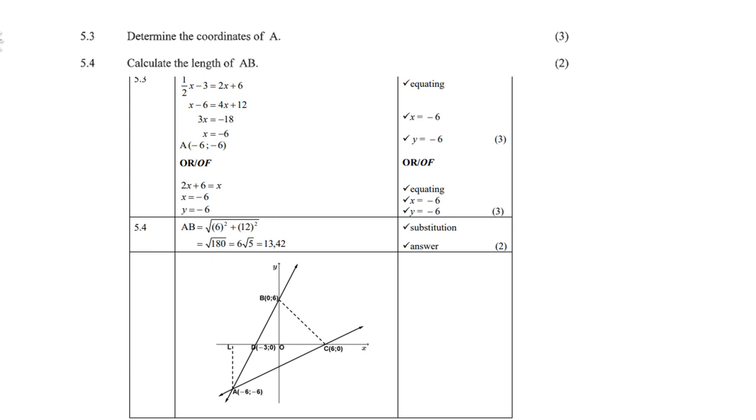5.4, how long is AB? So we're going to use the distance formula we've learned in analytical geometry. And you get 6 squared plus 12 squared, which is square root of 180, which is 13.42.